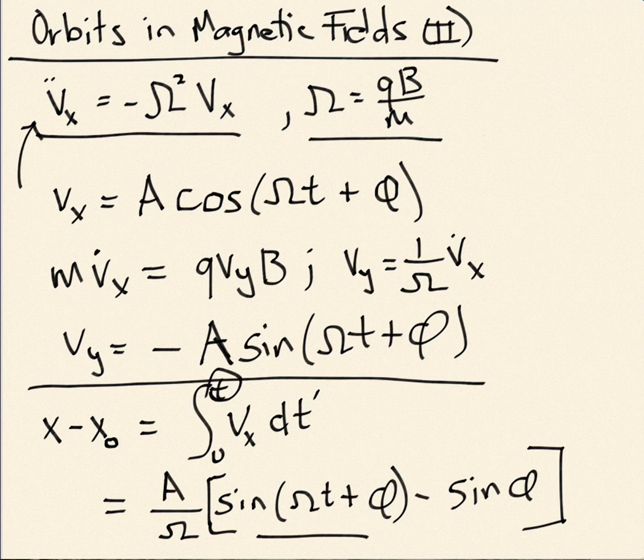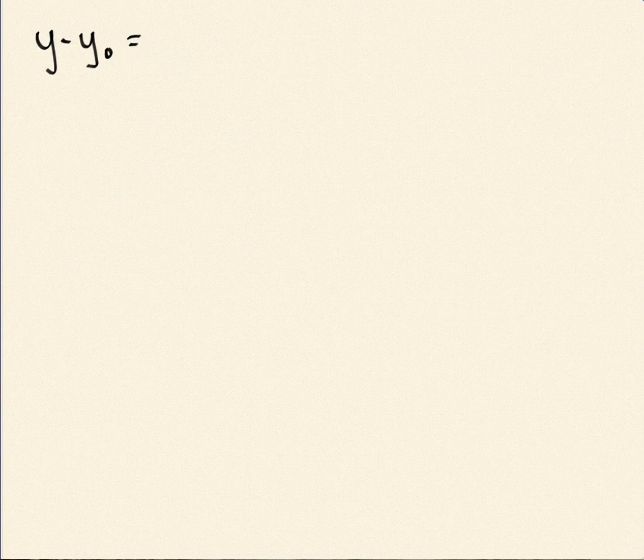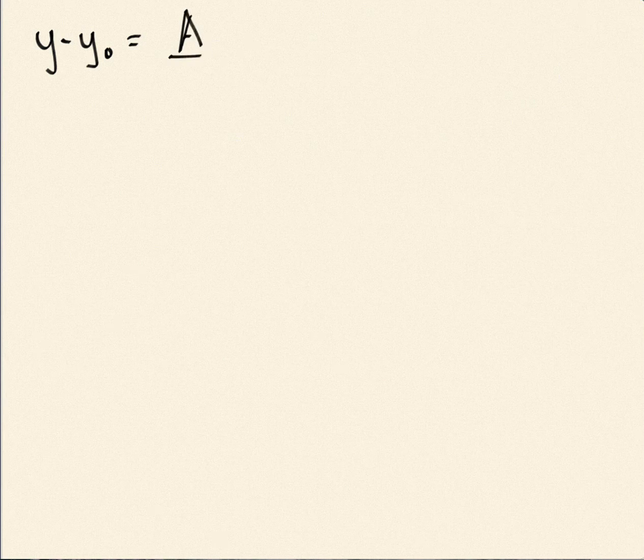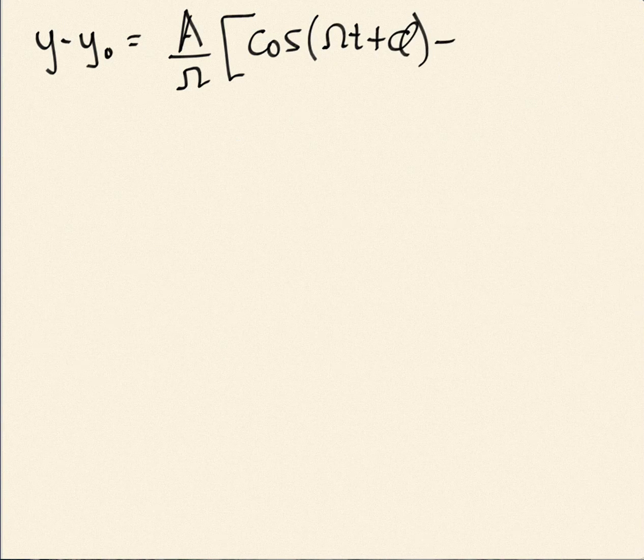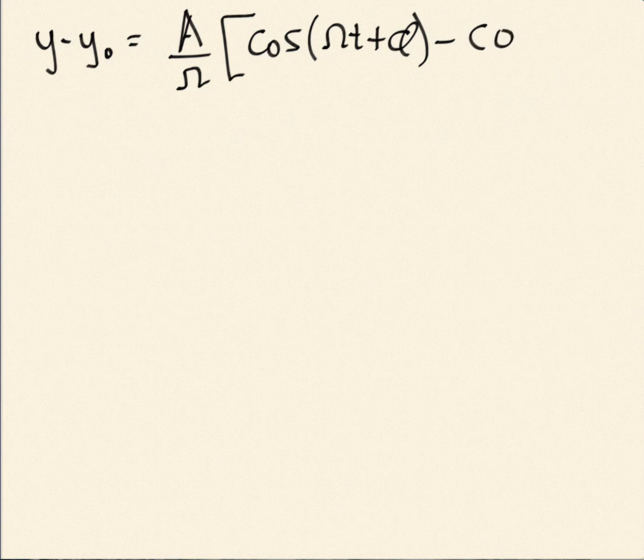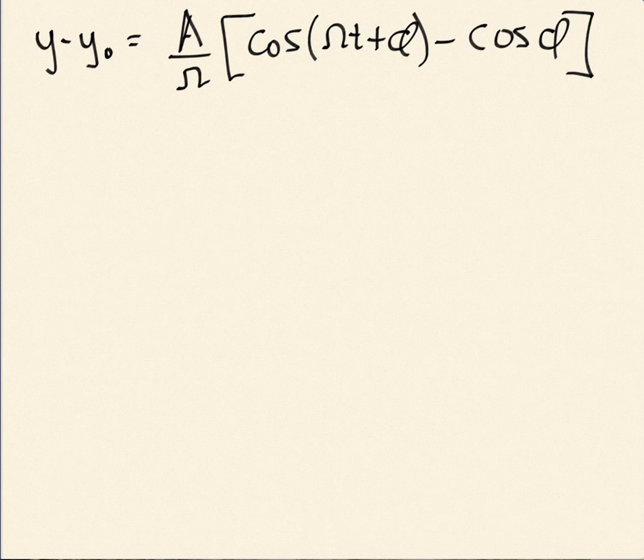And for the y position, let me write that down. I'm going to also do the integral. Maybe I'll spare the details. So y minus y naught, I'll do the same kind of integral. And what I'm going to get is A over omega times cosine of omega t plus phase. And also I'll have a minus cosine of phi. All right, good.